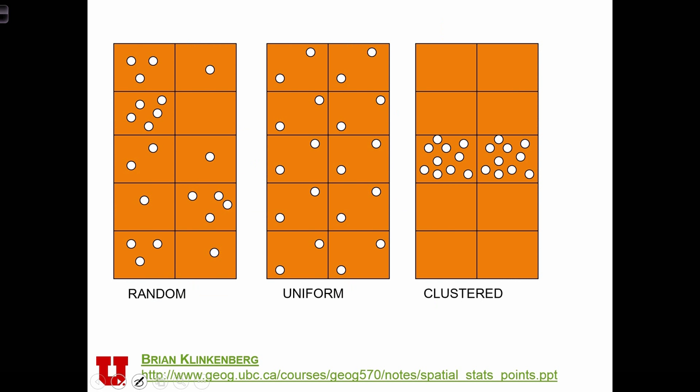So here we have three different point distributions sitting in a 10-quadrat grid. We're going to use the letter M to denote the number of grid cells, the number of quadrats used in our quadrat analysis. So the first point distribution is random. You see some with an average amount of points, some with fewer, some with more.